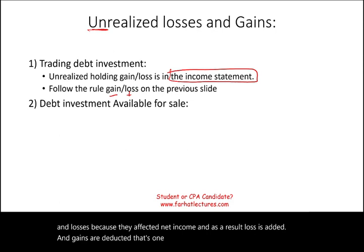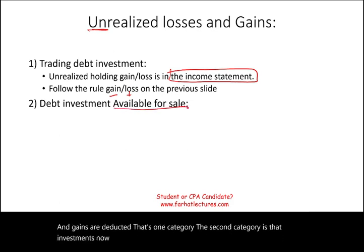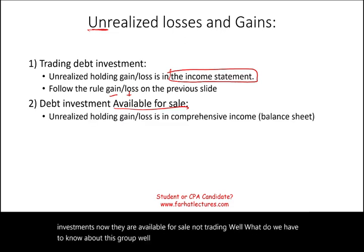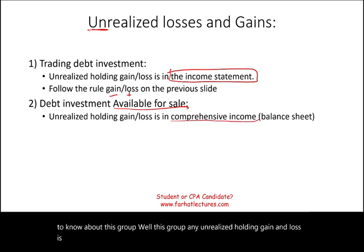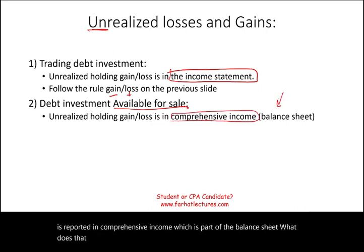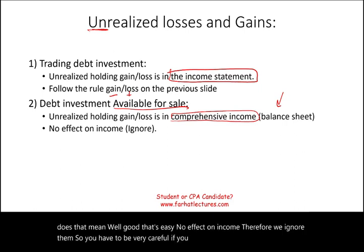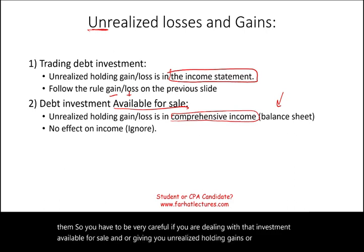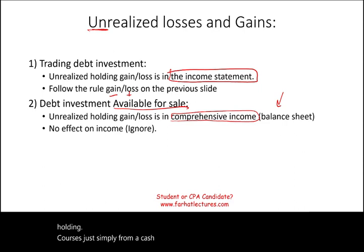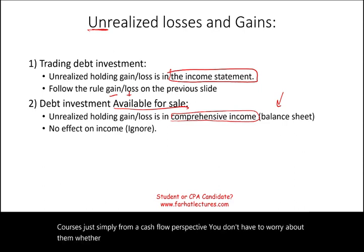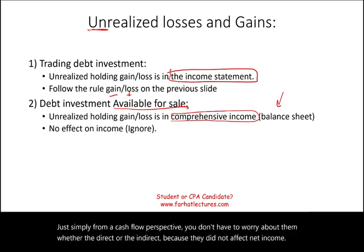The second category is available-for-sale investments. Any unrealized holding gain or loss is reported in comprehensive income, which is part of the balance sheet — it has no effect on net income. Therefore, from a cash flow perspective, whether direct or indirect, you ignore them entirely because they did not affect net income.